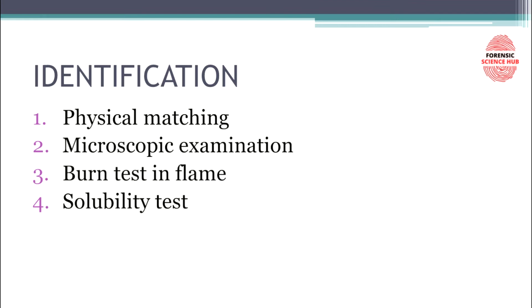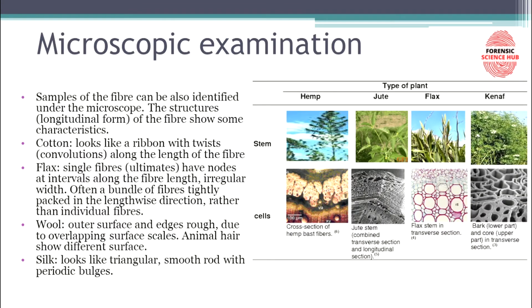In physical matching, we are physically going to match it — what can this fiber possibly be? Is it wool, is it silk, is it cotton? Just by looking at it physically, the color of the fiber, what color is it, what clothing can it be detached from — all these things are looked at in the physical matching process.